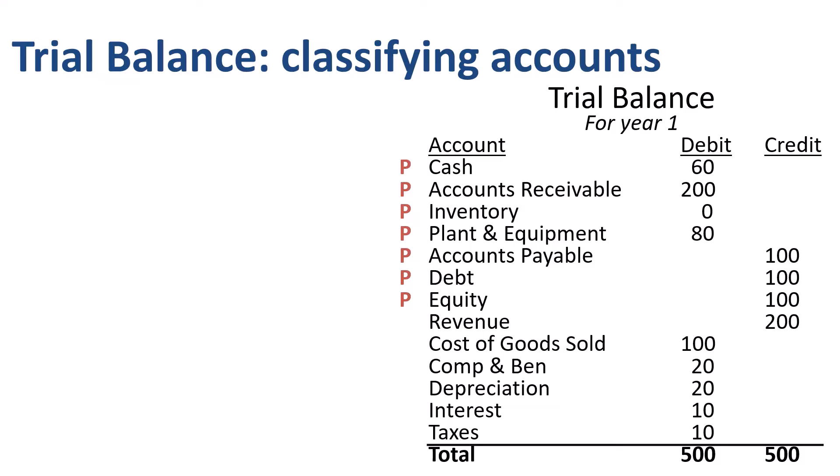Equity is an equity account — a permanent account. In real life, a company could have multiple equity accounts: common stock, additional paid-in capital, retained earnings, accumulated other comprehensive income, and non-controlling interest. But we are keeping it simple here. Revenue is a revenue account — a temporary account. In real life, a company probably has more detail: revenue from products, revenue from services, subscription revenue, etc. Cost of goods sold, compensation and benefits, depreciation, interest expense, and provision for income taxes are expense accounts — these are temporary accounts.